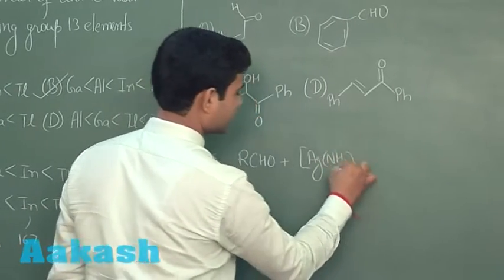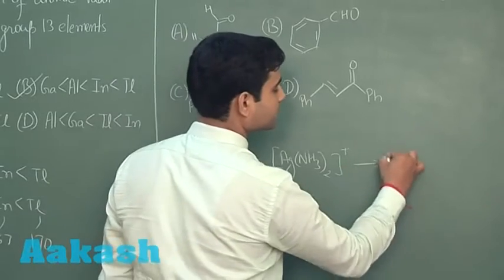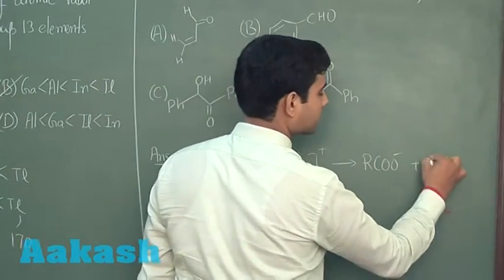This is our Tollens reagent. If we have an aldehyde, it gives us carboxylate ion and silver.